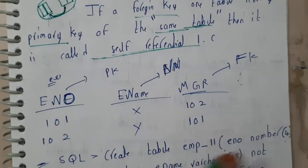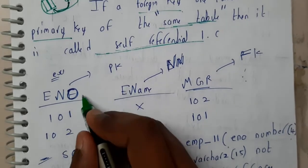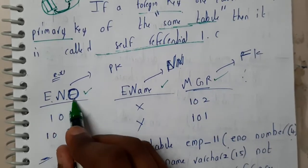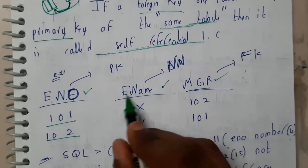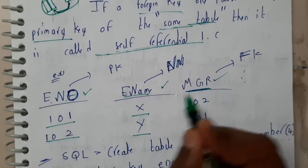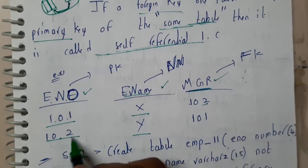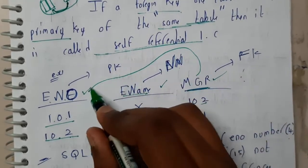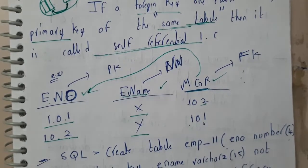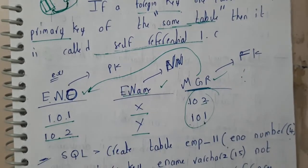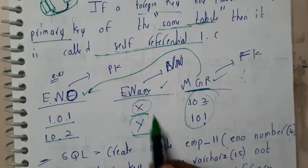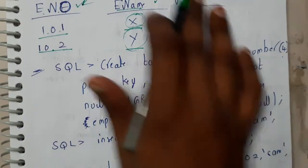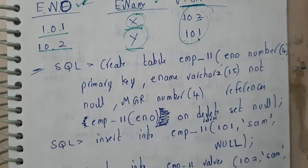Let us assume we have the details of employees: employee number, employee name, and manager. Employee number 101 has name X, and 102 has name Y. The manager for 101 is 102, and for 102 is 101. So the manager numbers are nothing but employee numbers — this is self-referential, they are referring to themselves.